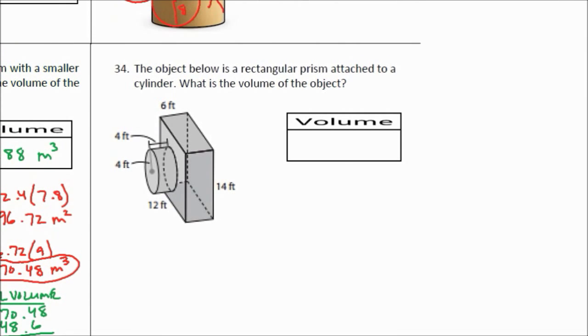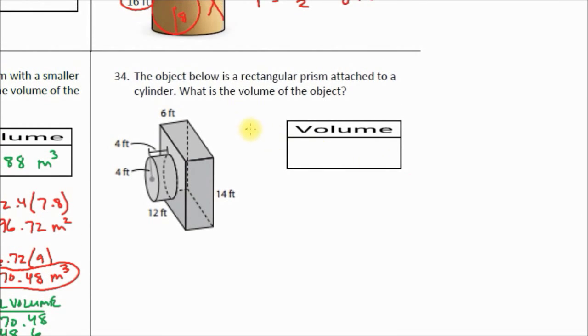Next one is, we've got something that looks like a camera. The object below is a rectangular prism attached to a cylinder. What's the volume of the object? Well, this time we're not subtracting. We have a rectangular prism and a cylinder. We're adding those two things together. So we're going to follow the same procedure. First step is, let's find the volume of the rectangular prism.